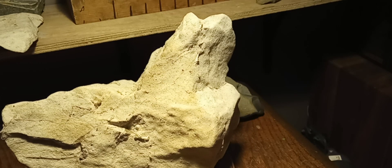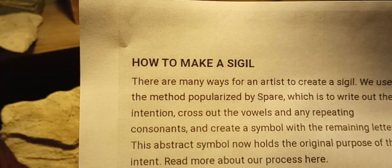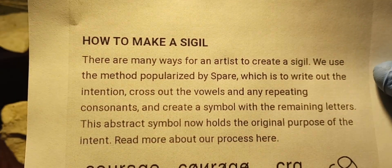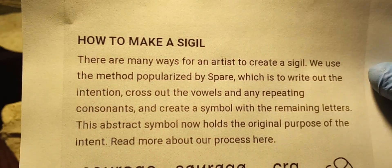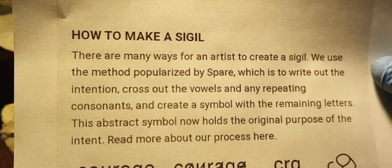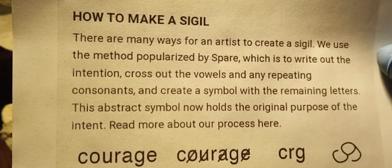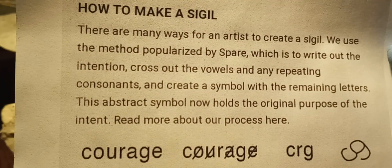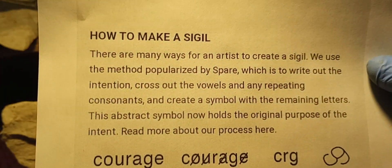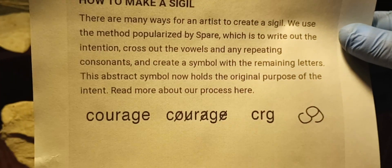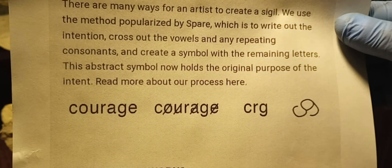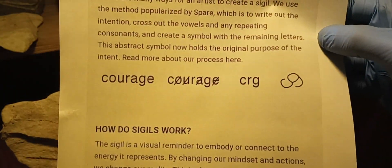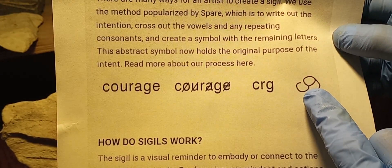How to make a sigil. There are many ways for an artist to create a sigil. We use the method popularized by Austin Osman Spare, which is to write out the intention, cross out the vowels and any repeating consonants, and create a symbol with the remaining letters. This abstract symbol now holds the original purpose of the intent. That's the end result.